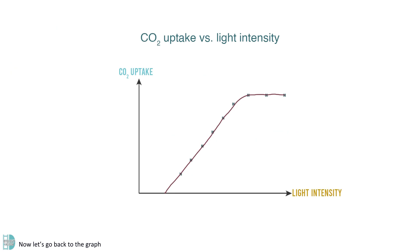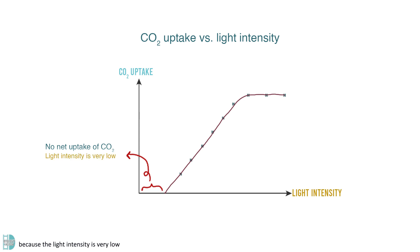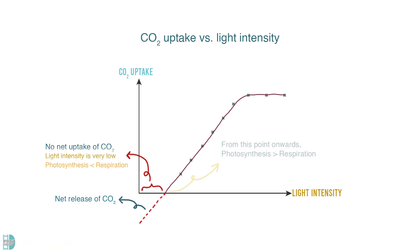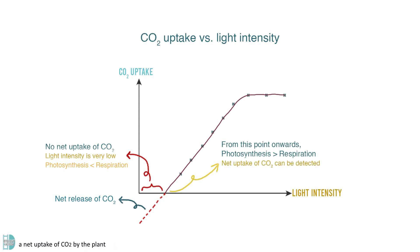Now, let's go back to the graph. Initially, there's no net uptake of carbon dioxide because the light intensity is very low. The rate of photosynthesis is lower than the rate of respiration, so there is a net release of carbon dioxide. But when the light intensity is increased up to a certain point, the rate of photosynthesis is greater than the rate of respiration. This is when you start to detect a net uptake of carbon dioxide by the plant.